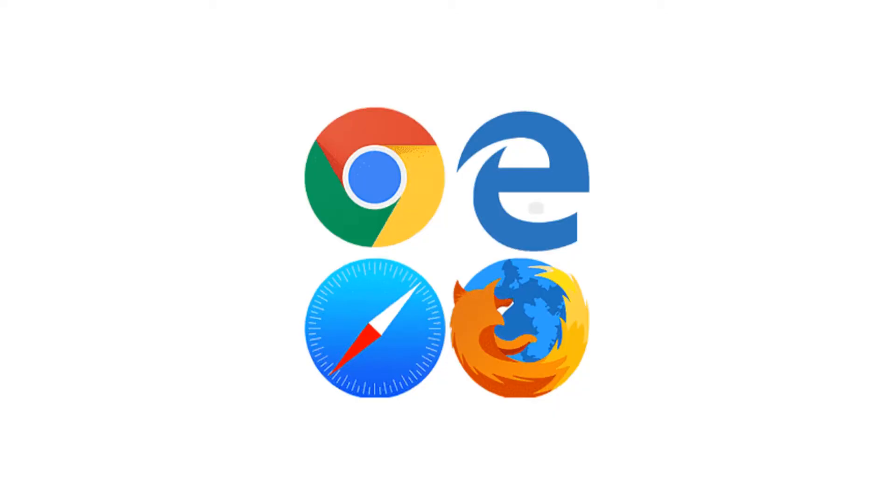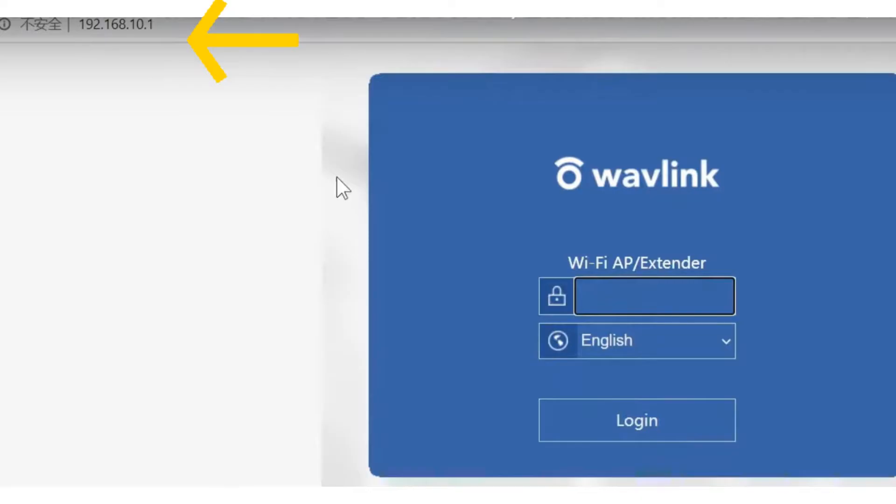Open any browser like Google Chrome, Firefox, or Safari. In the URL, type 192.168.10.1 and hit enter. This will take you to the setup page. If this IP doesn't work, try ap.setup and hit enter.